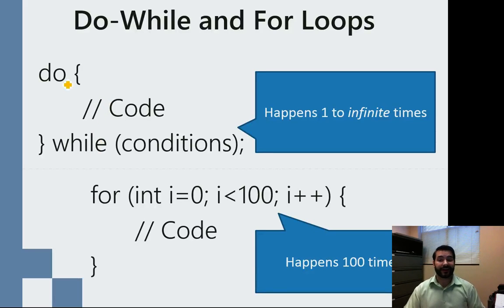We also have two other styles of loops. We have something known as the do-while loop, and then we also have something known as the for loop.